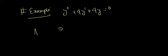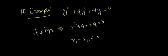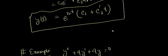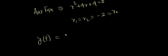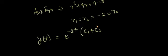Let's see a short numerical example. Our equation is y'' + 4y' + 4y = 0. The auxiliary equation is r² + 4r + 4 = 0, which has two roots r1 = r2 = -2. Calling this r0 = -2, the general solution is e^(-2t)·(c1 + c2·t). That's it — you are done.